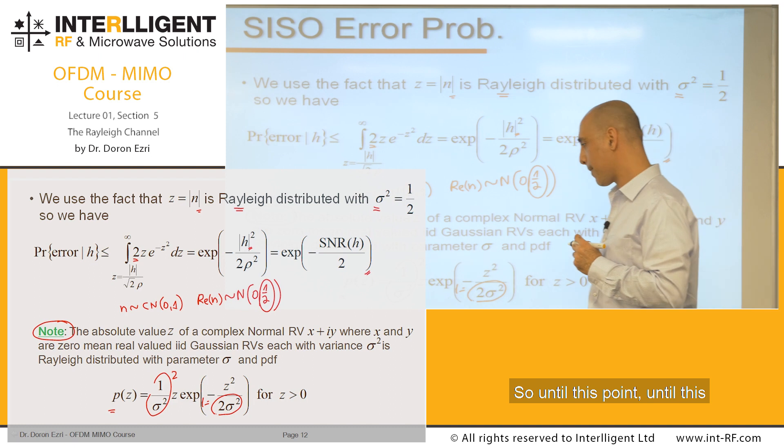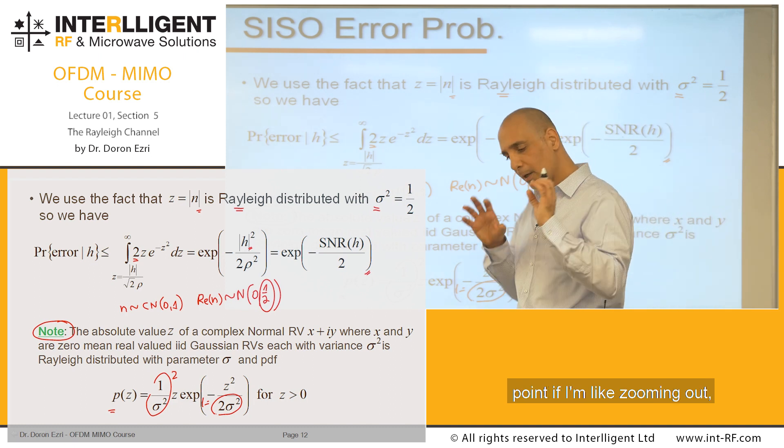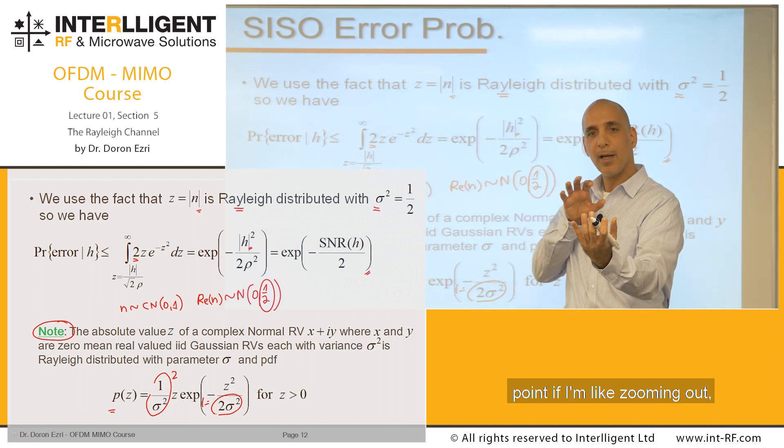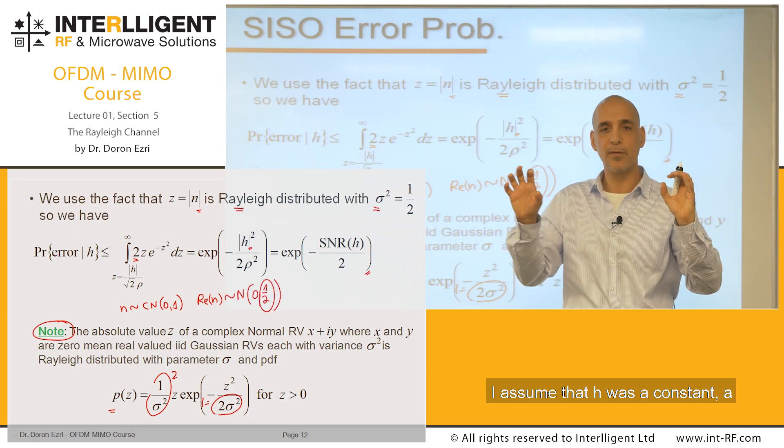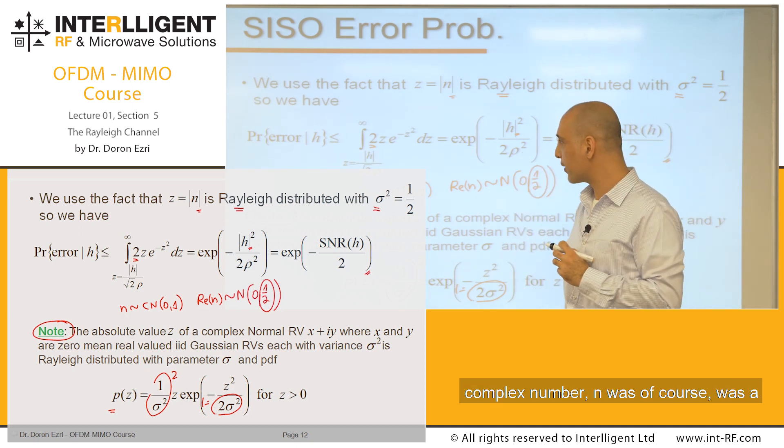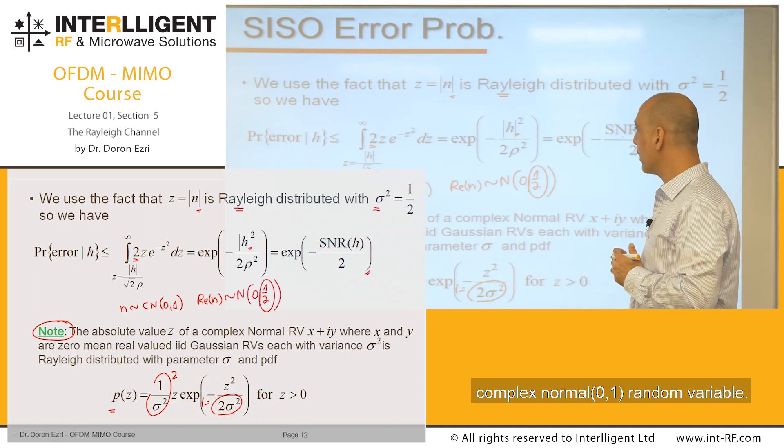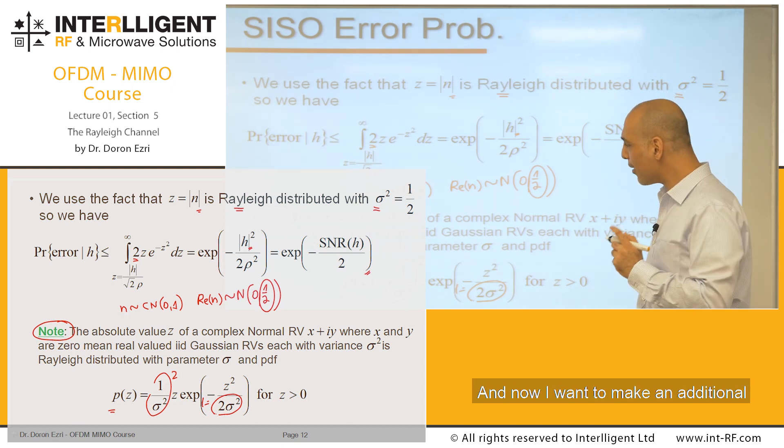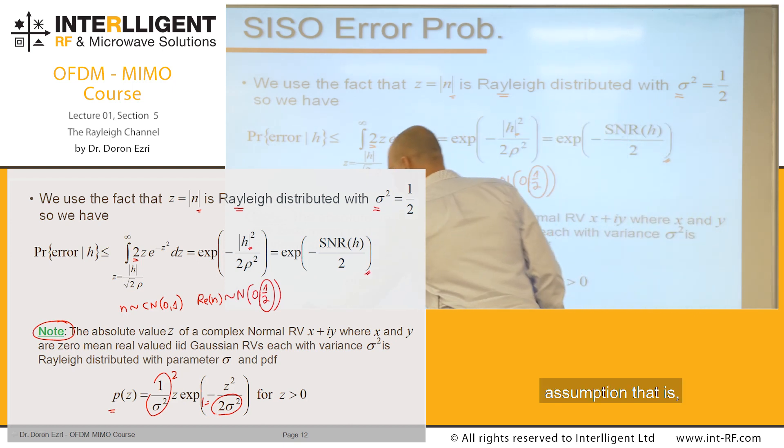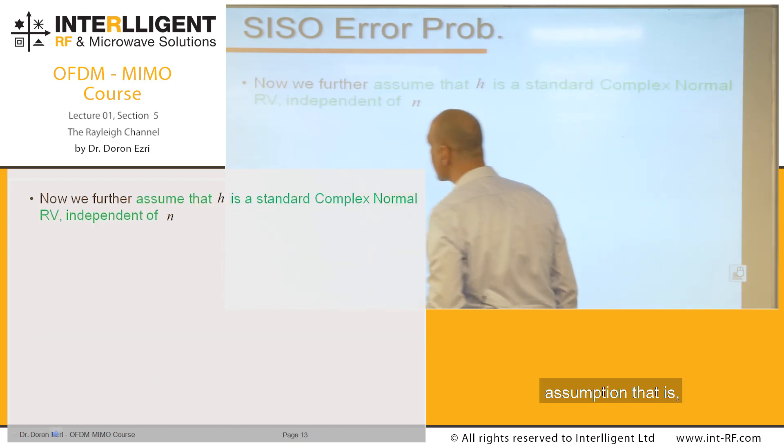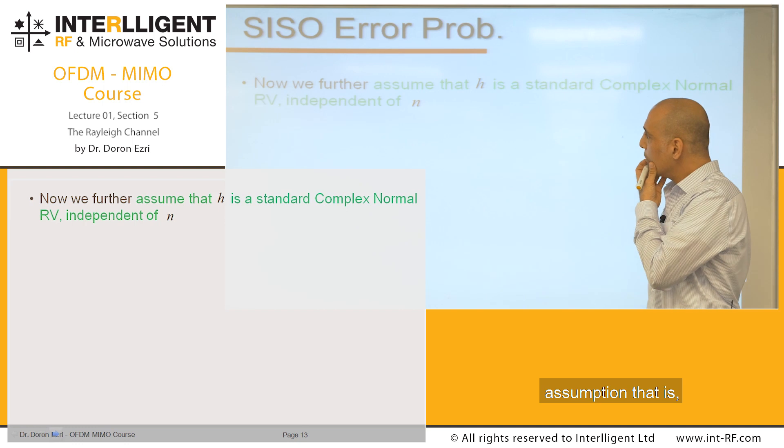So until this point, if I'm zooming out, I assume that H was a constant complex number, and W was of course a complex number (0,1) random variable. And now I want to make an additional assumption.